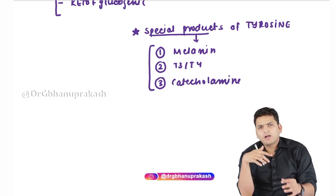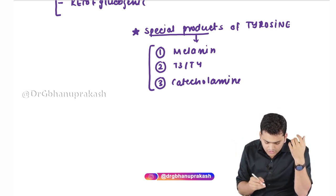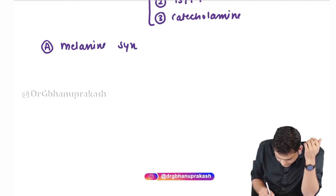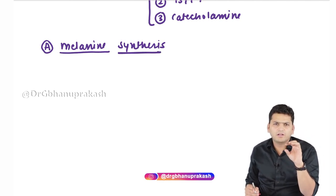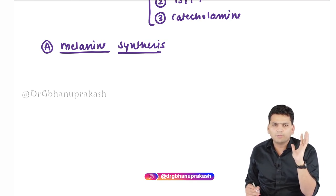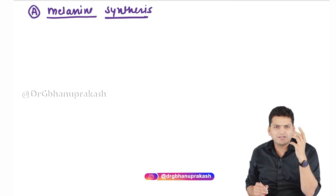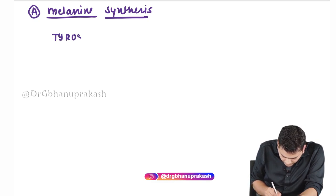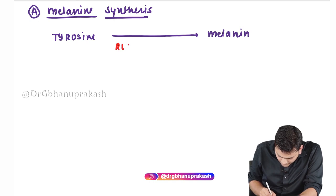We are going to discuss how melanin is synthesized and what are the clinical correlations with melanin, T3/T4, and catecholamines. Starting with the first: melanin synthesis. From physiology, you may know that melanin is the molecule required for skin color. Every one of us has a different complexion — the reason is melanin concentration. The more the melanin, the darker the complexion. The tyrosine converts into melanin, and the rate-limiting step for that is the enzyme tyrosinase.